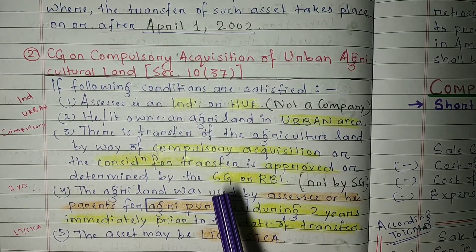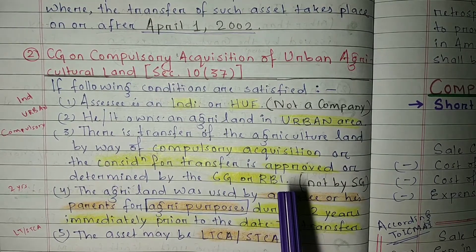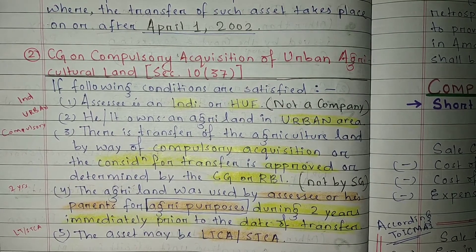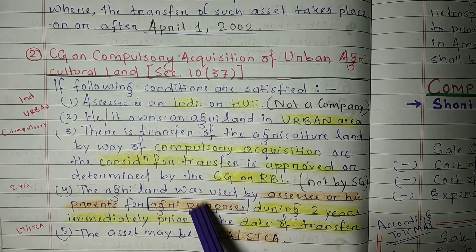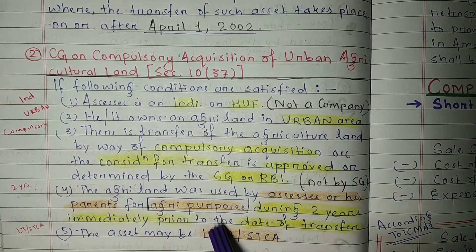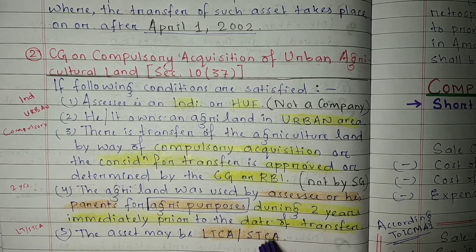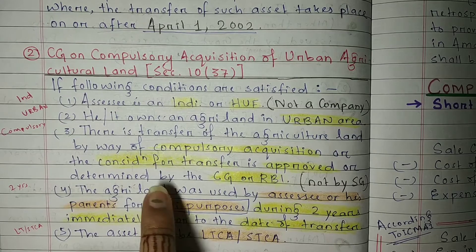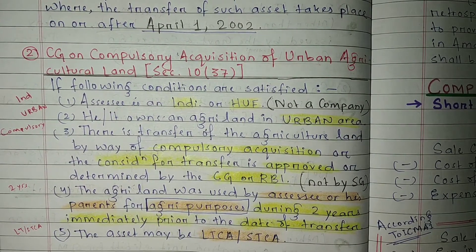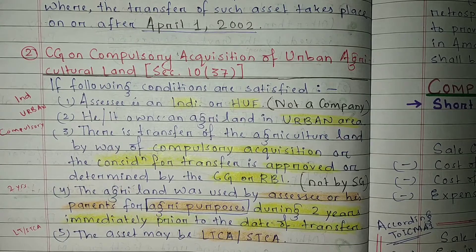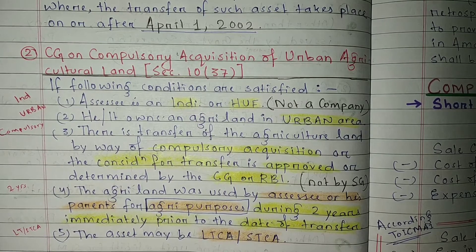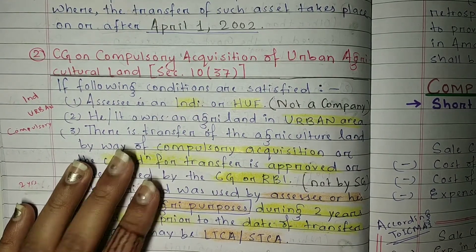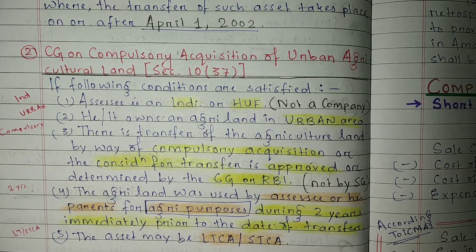If and only if the central government and RBI approve or determine it, then it will be exempt under Section 10. Fourth condition: the agricultural land was used by the assessee or his parents for agricultural purposes during the two years immediately prior to the date of transfer. This condition means the assessee or their parents must have been personally farming the land for two years before the transfer — not having others do it for them. This provision was brought for the benefit of farmers.